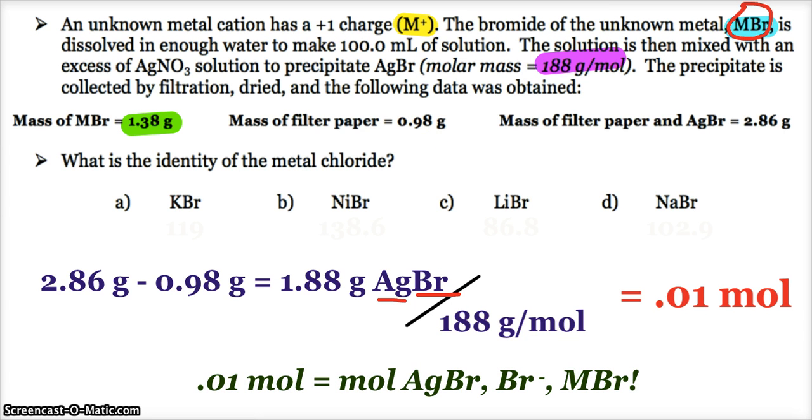And so, I see that this is a multiple-choice question, so I have to identify that metal. Is it potassium bromide, nickel bromide, lithium bromide, or sodium bromide? So what do they all have different and unique? Their molar masses, of course. So I can look at their molar masses, and then somehow I can hopefully try to link up the fact that I know how many moles of my